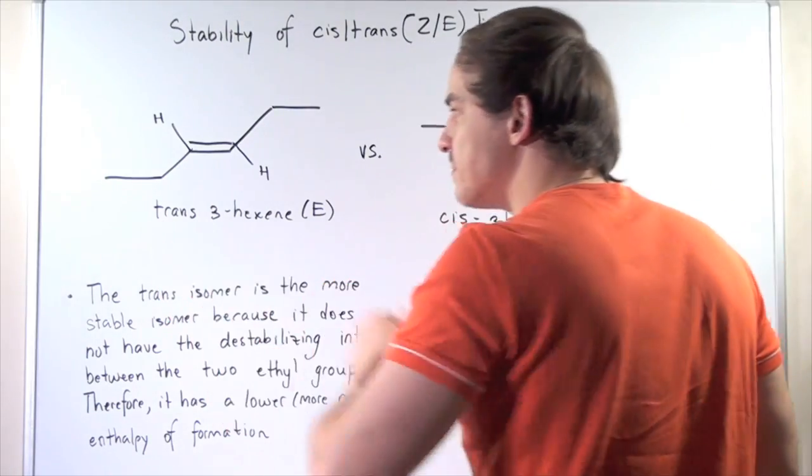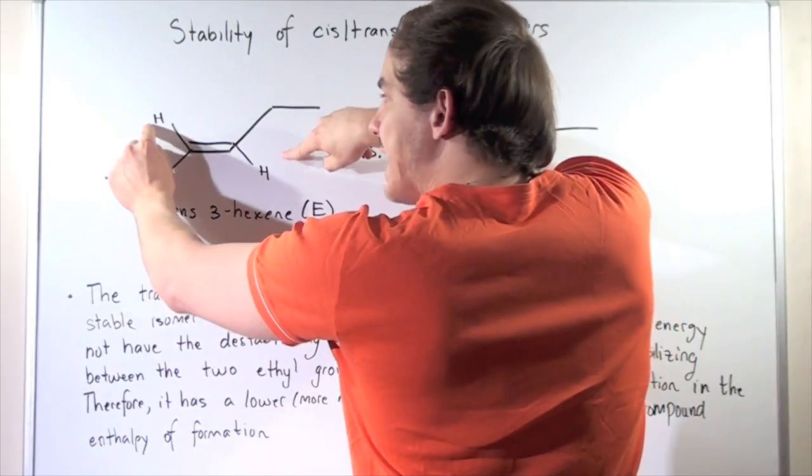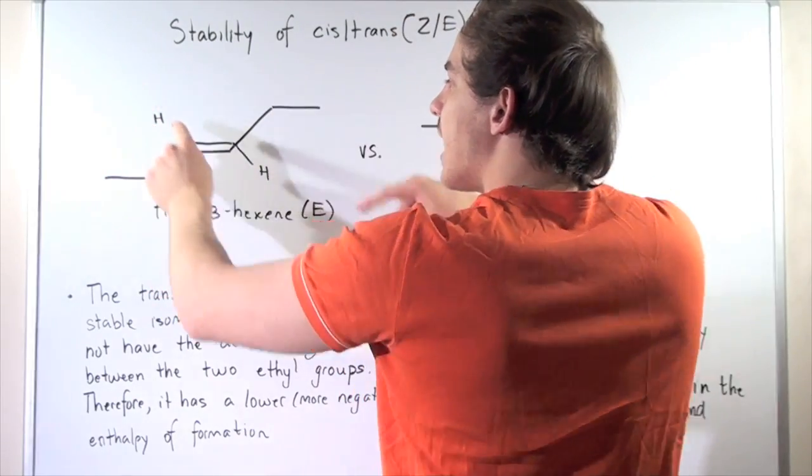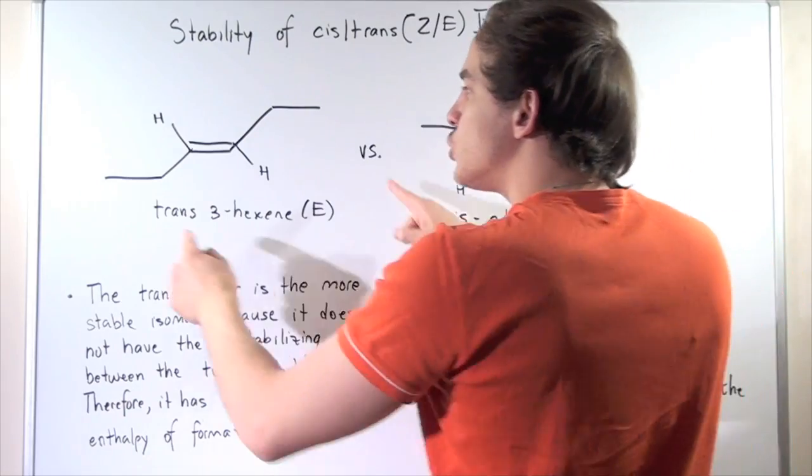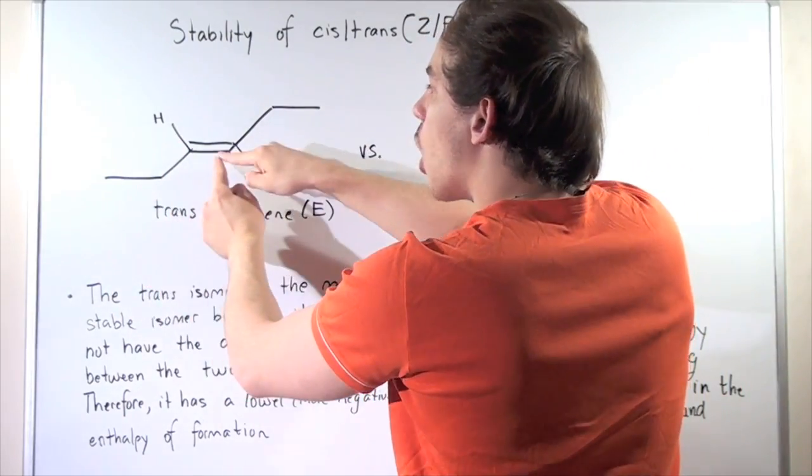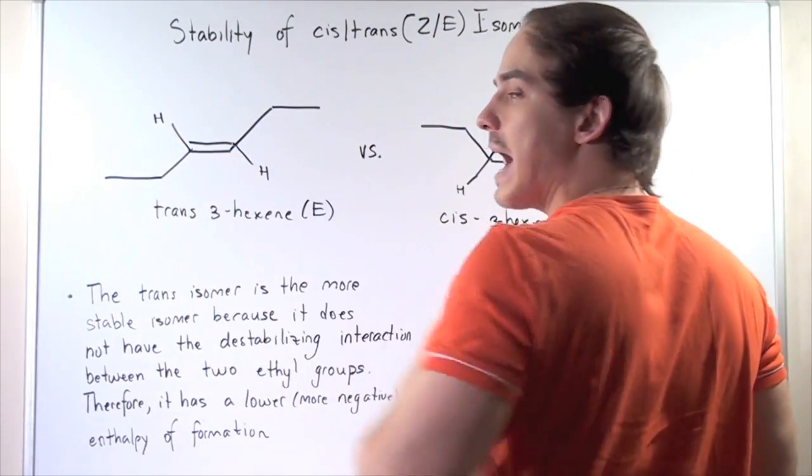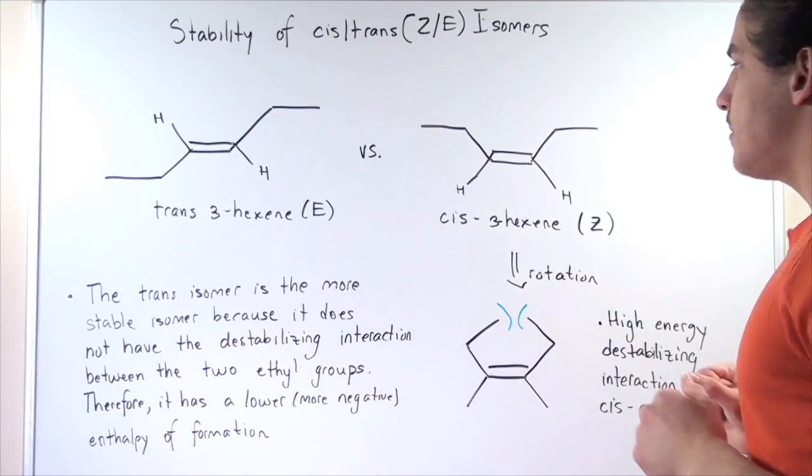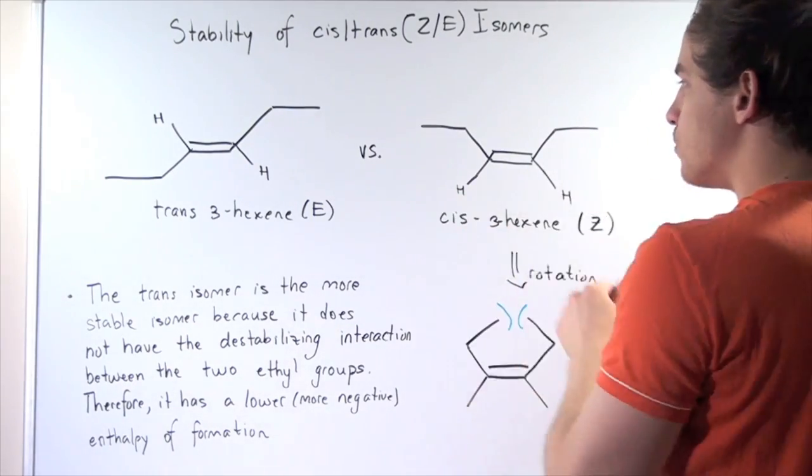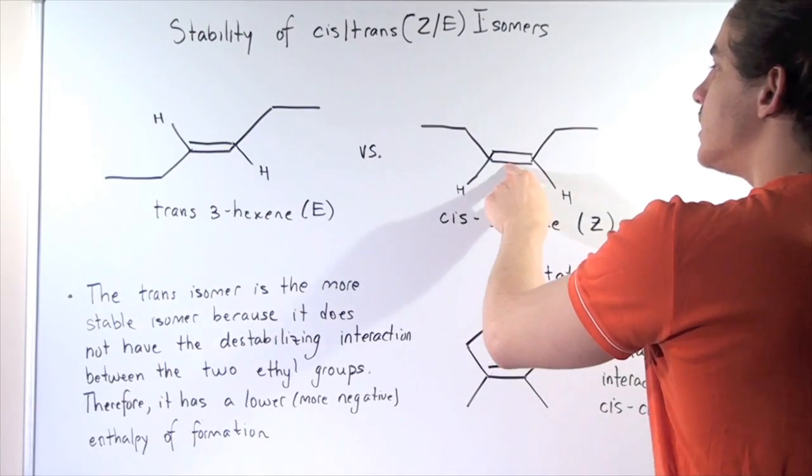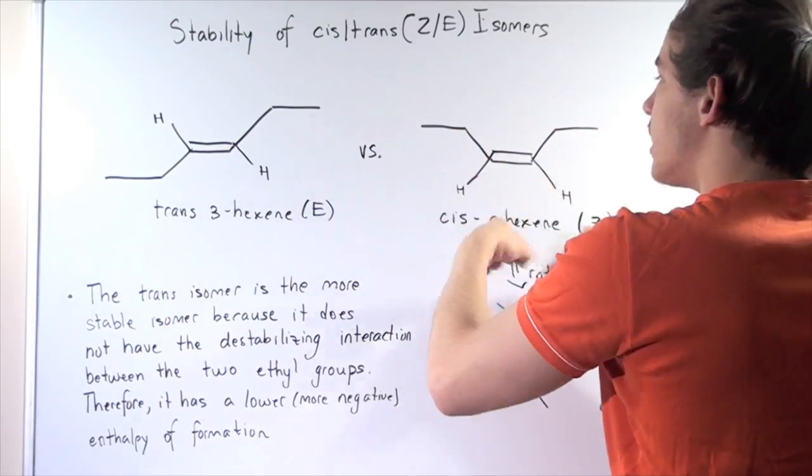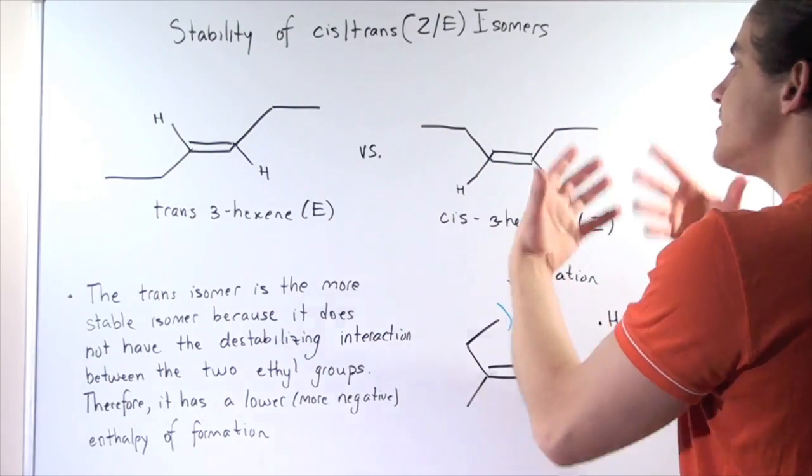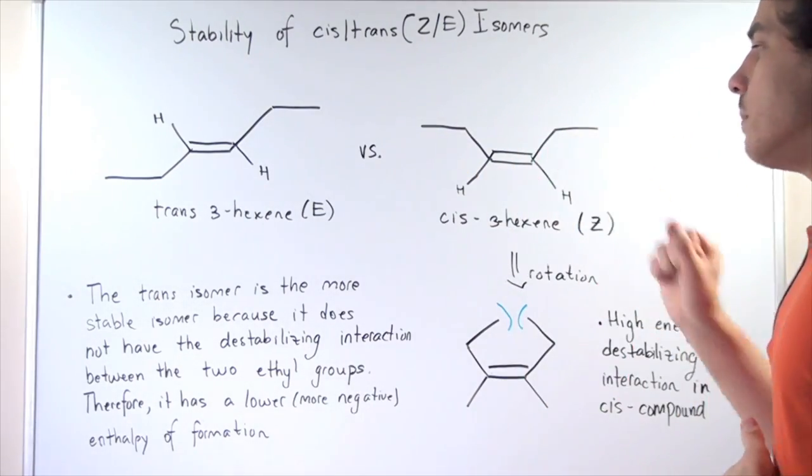Now trans simply means the smaller H groups are on opposite sides of the double bond, while the E means that the two higher priority groups are on opposite sides of our double bond. Likewise, cis simply means that the two H groups are on the same side of the double bond, while the Z means that the higher priority groups are on the same side of the double bond.